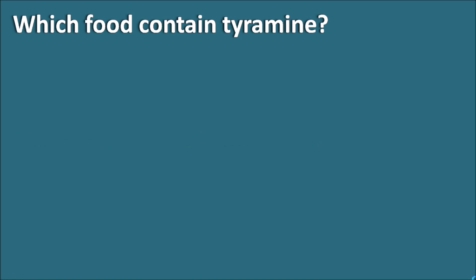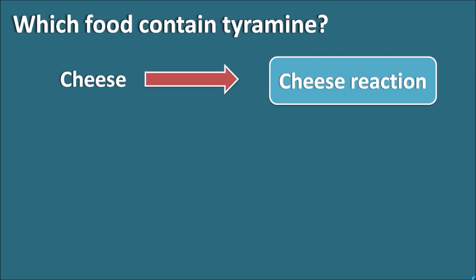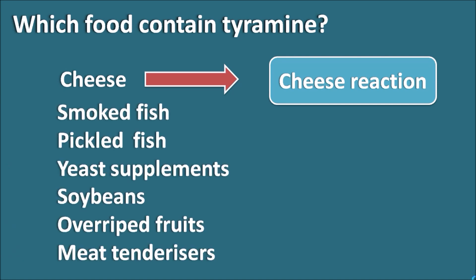Now let us see which types of food contain tyramine and can precipitate the cheese reaction. The most important source of tyramine is cheese — since this drug interaction was initially observed with cheese, it is called the cheese reaction. However, tyramine is also present in other fermented and smoked foods. Examples include smoked fish, pickled fish, yeast supplements, soybeans, overripe fruits, and meat tenderizers. Any of these foods can contain significant tyramine levels, and when taken along with MAO inhibitors, they may trigger the cheese reaction.